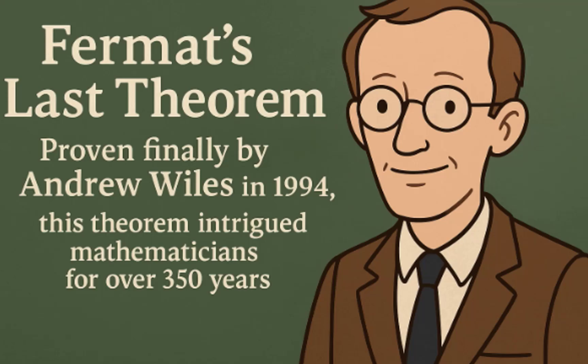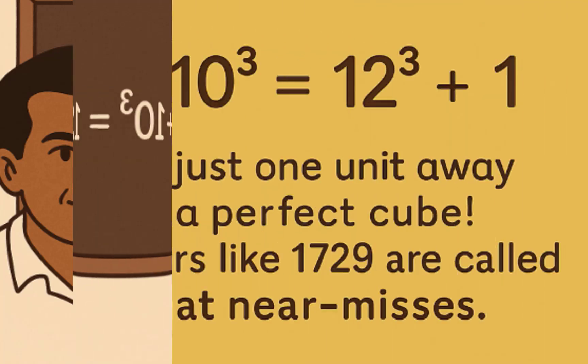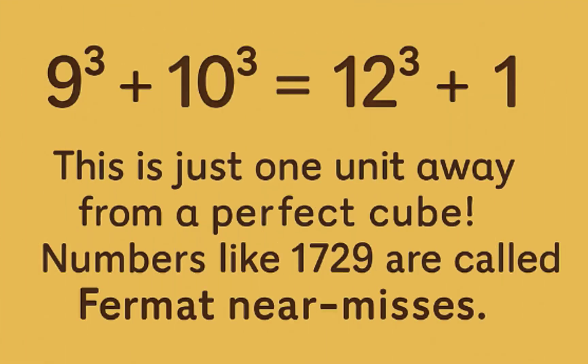But Ramanujan, decades earlier, had his own insights. He found equations astonishingly close to Fermat's forbidden solutions, such as 9 cubed plus 10 cubed equals 12 cubed plus 1. This is just one unit away from a perfect cube. Numbers like 1729 are called Fermat near misses.